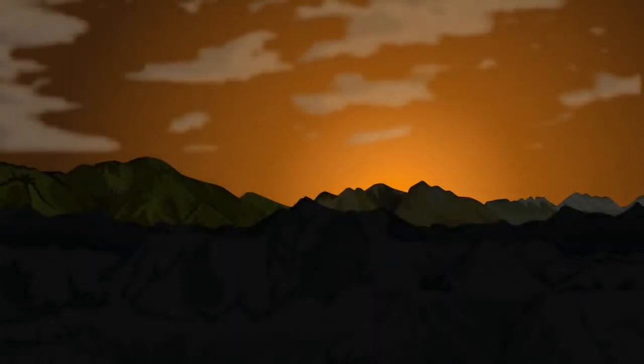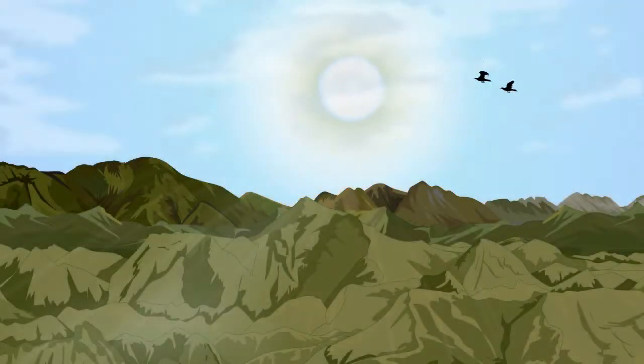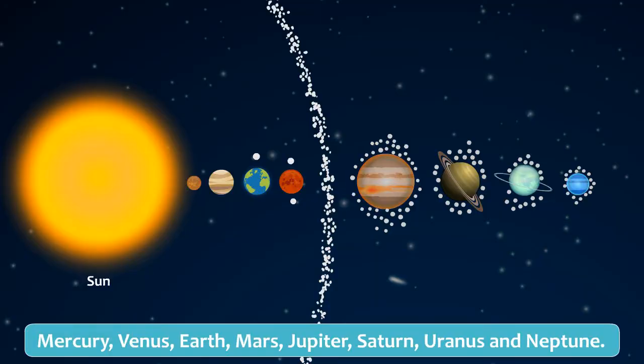The planets of the Solar System get the heat and light from the Sun. The planets in sequence to their distance from the Sun are Mercury, Venus, Earth, Mars, Jupiter, Saturn, Uranus and Neptune.